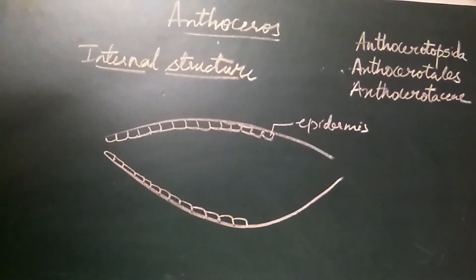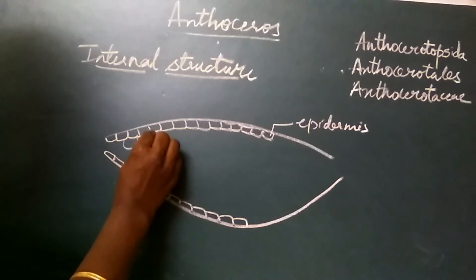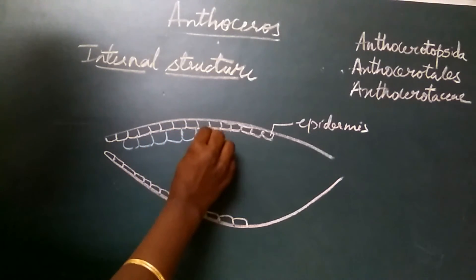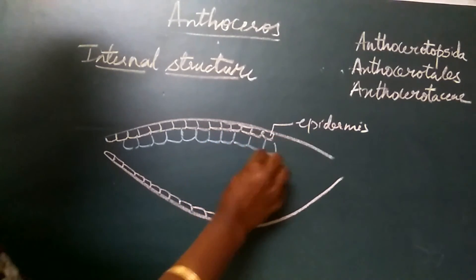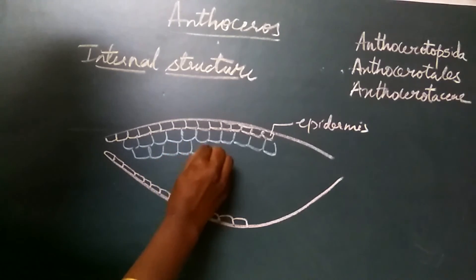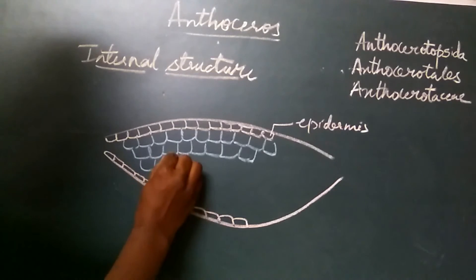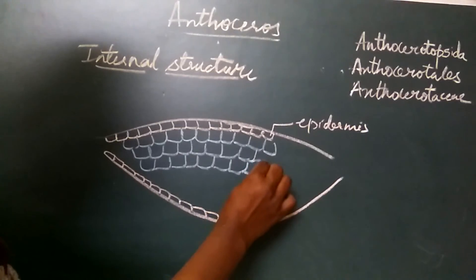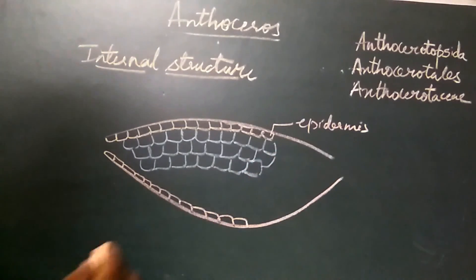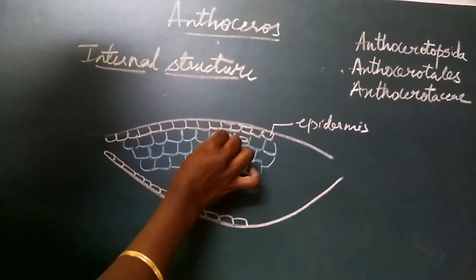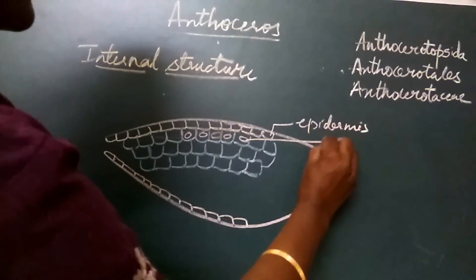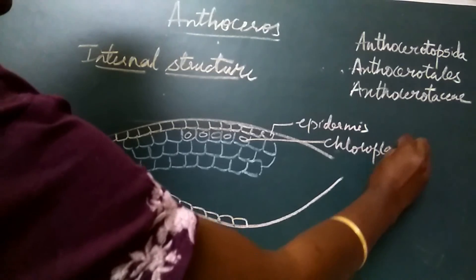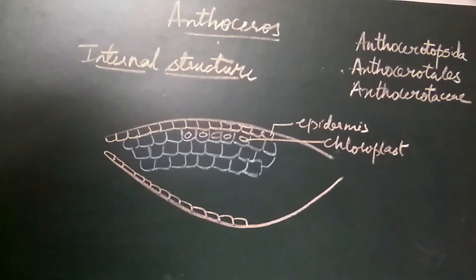Below the epidermis is the thallus, which is composed of thin-walled parenchymatous cells. These cells are compactly arranged without any intercellular spaces. All the cells are similar in structure and contain one or more discoid or oval-shaped chloroplasts. The chloroplasts of Anthoceros contain pyrenoids. This is a characteristic feature of the class Anthocerotopsida.